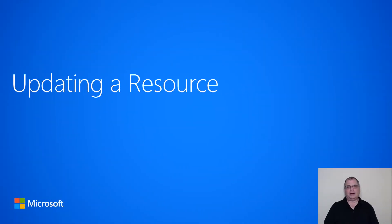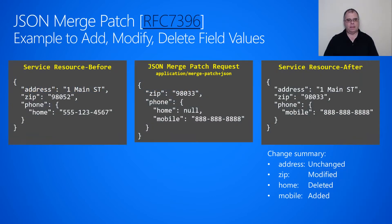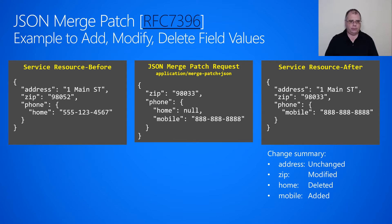In this section, we'll talk about how to update or modify a resource using PATCH and the JSON Merge Patch payload. The JSON Merge Patch payload is described in RFC 7396. In this example, I'm going to demonstrate how to use it to add properties to a resource, modify an existing property in a resource, and also how to delete a property from a resource.